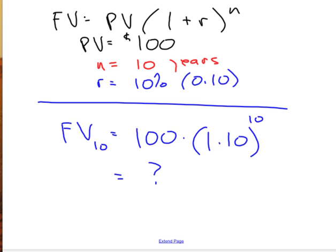What if we go in between? Instead of 0% interest or 100% interest, what if the interest rate is 10%? Or 0.1. And what if n is 10 years? Well, use the formula. The future value after 10 years will be your original $100 times 1.1 to the 10th power.